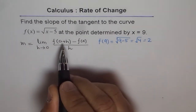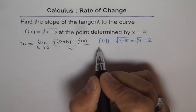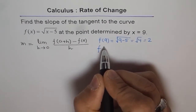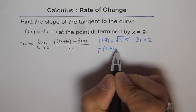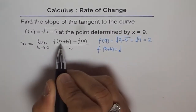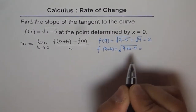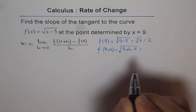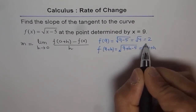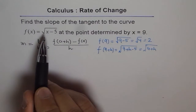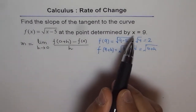Now let's find f(a + h). Since a = 9, we find f(9 + h). We substitute (9 + h) in place of x, giving us √((9 + h) − 5) = √(4 + h). So f(9 + h) = √(4 + h).